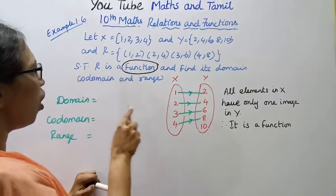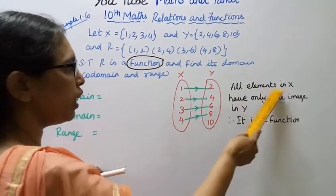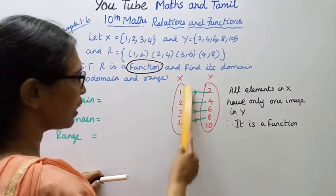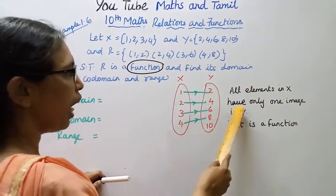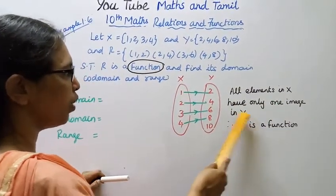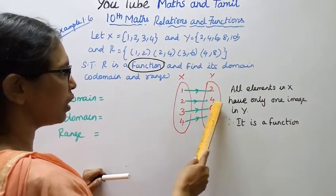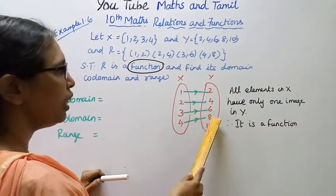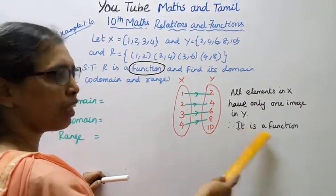This is the easy R is a function. All elements in X will have only one image in Y. Therefore it is a function.